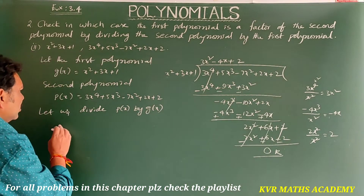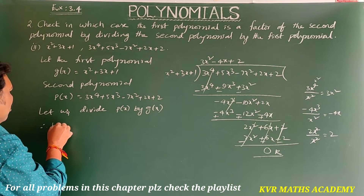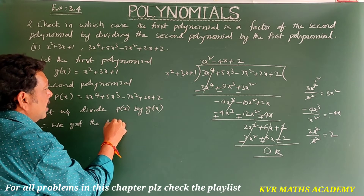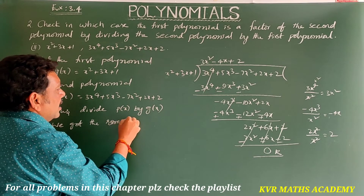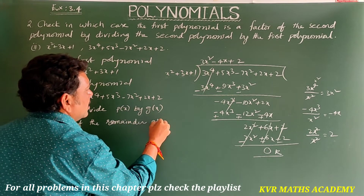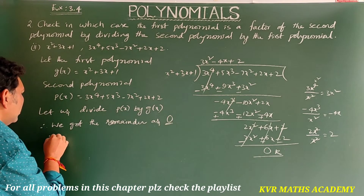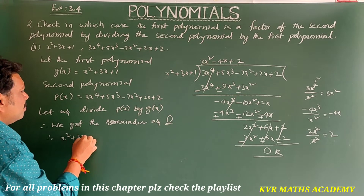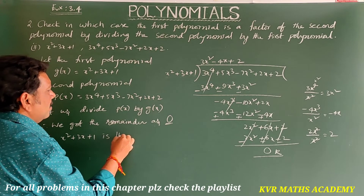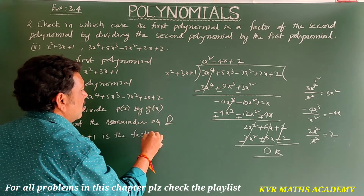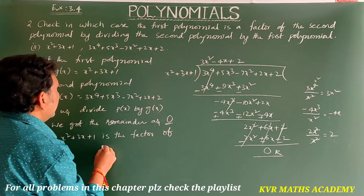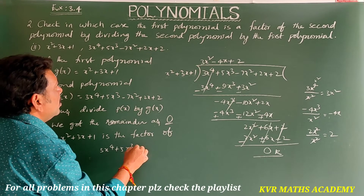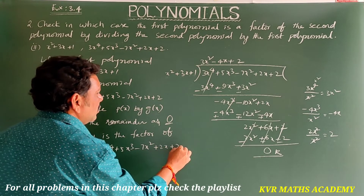Therefore, we got the remainder as 0, so x² + 3x + 1 is a factor of 3x⁴ + 5x³ - 7x² + 2x + 2.